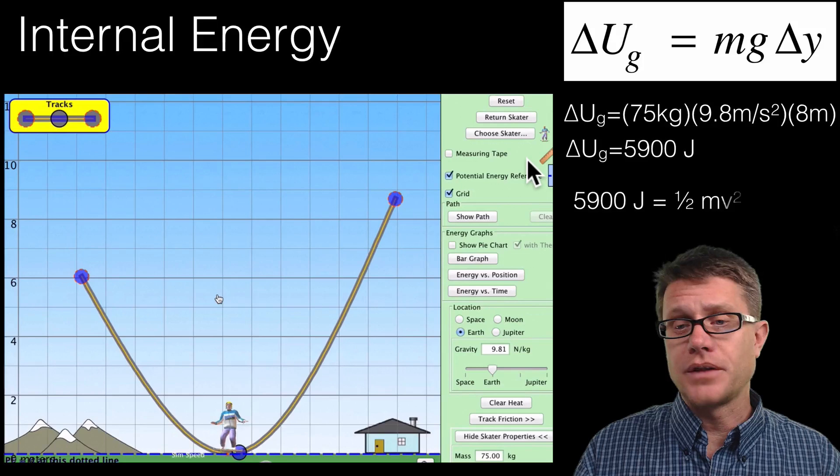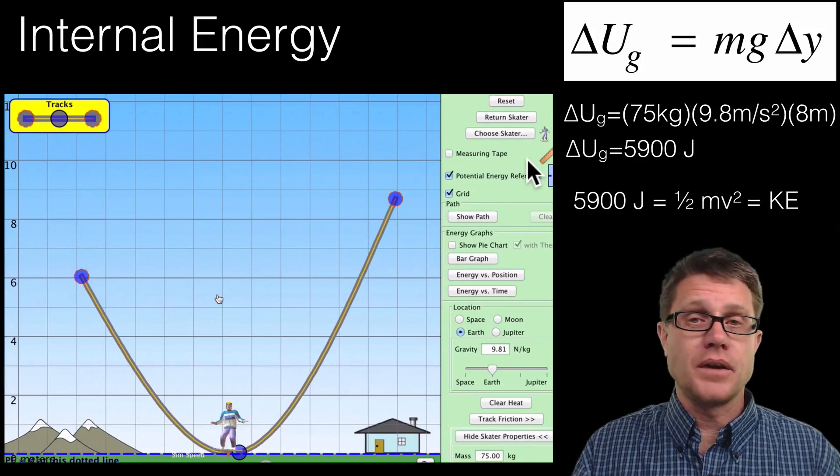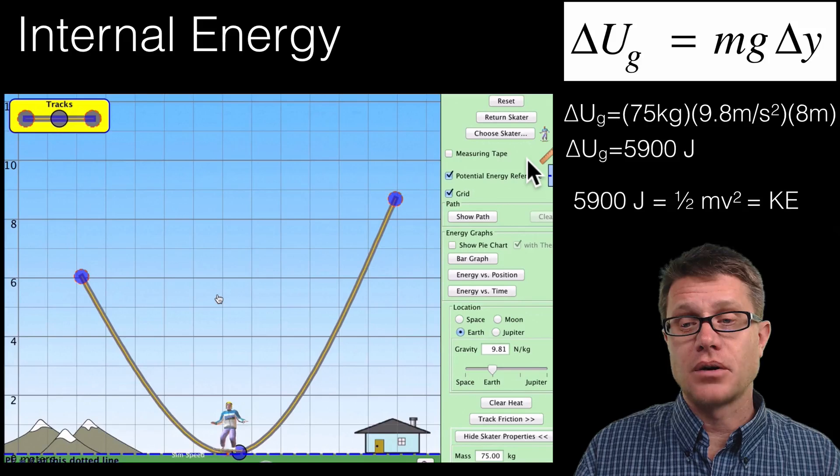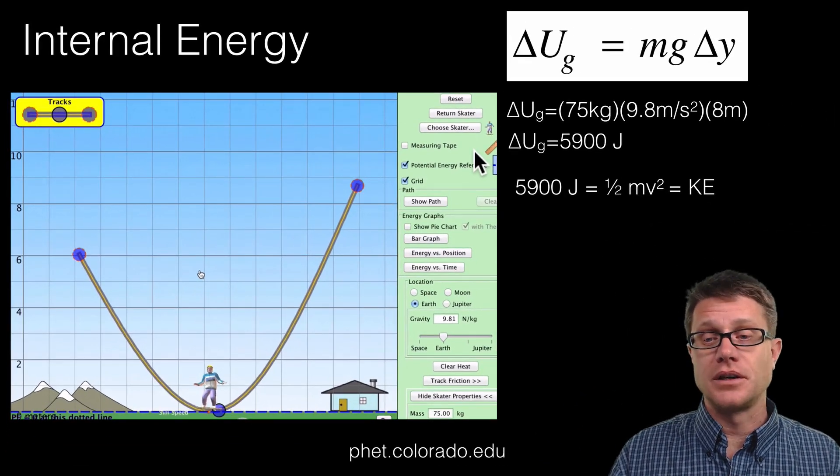We could also, if we know what that equation for kinetic energy is, which is 1/2 mv squared, we could even figure out how fast is that skateboarder going at the bottom. If we say that all that energy is converted from potential into kinetic.